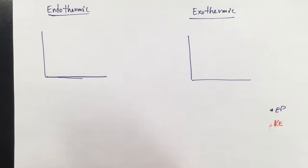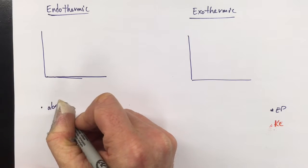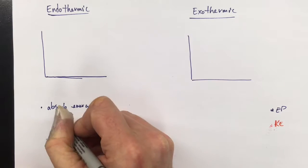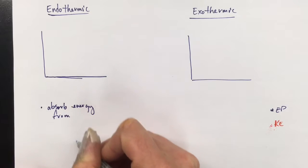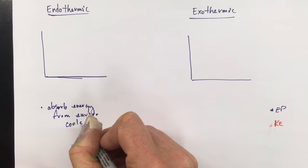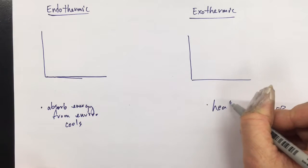We remember that bonds being made give off energy, and bonds breaking use energy. So an endothermic reaction is going to absorb energy from the environment, so the environment cools. So it cools the environment down, and this is going to heat the environment up.